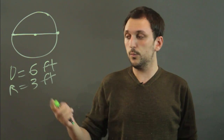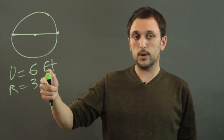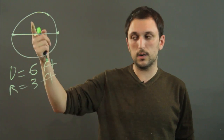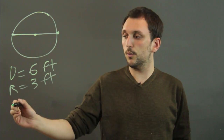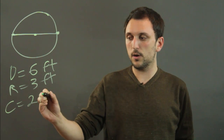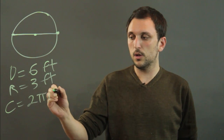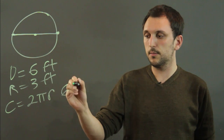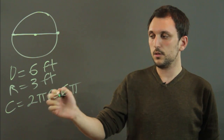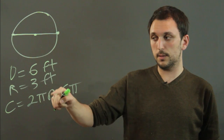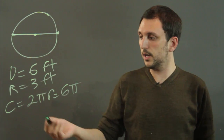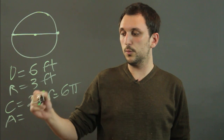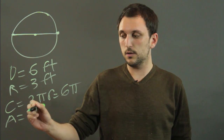Now when we want to find the radius, sometimes we want it so we can find the area or the circumference. The circumference would be 2 pi r, which in this case would be 6 pi because 2 times the radius which is 3. Or sometimes you need to find the area which would be pi r squared.